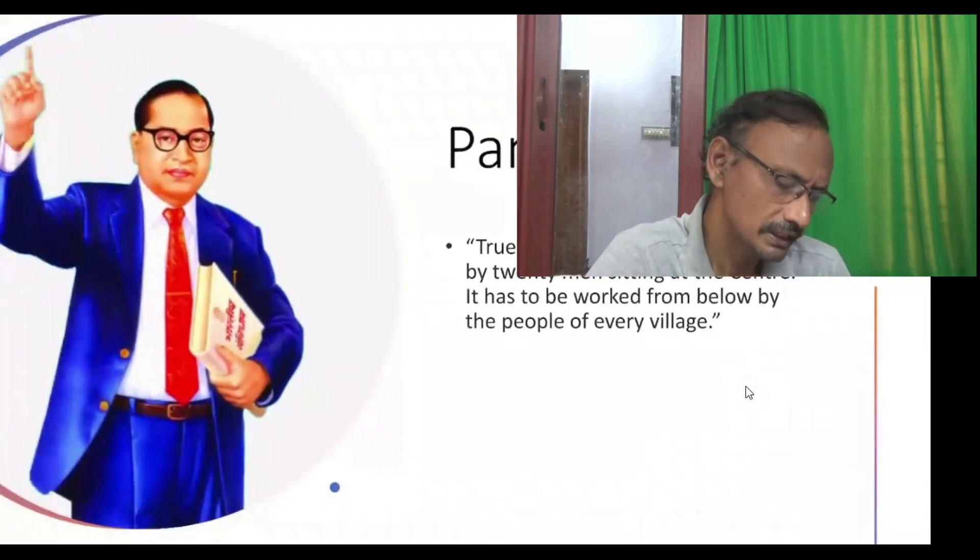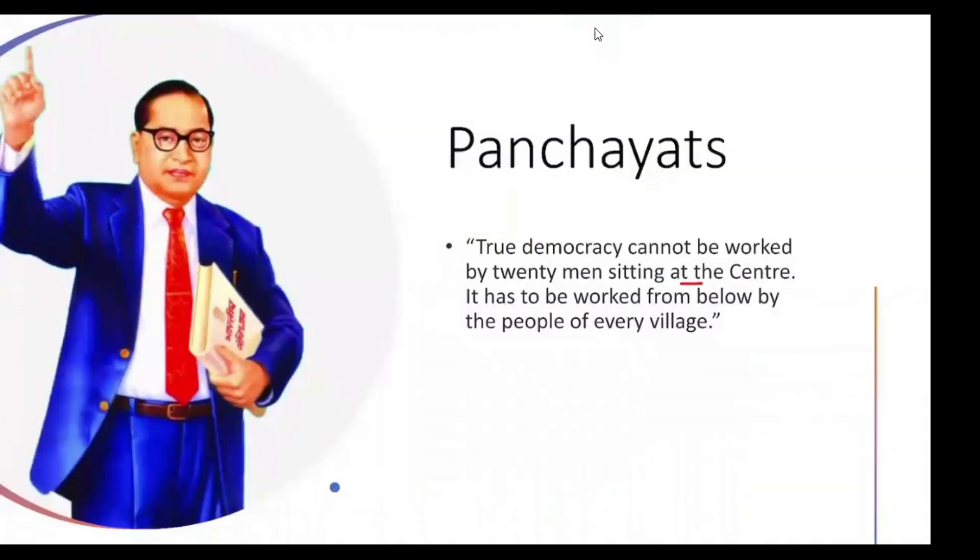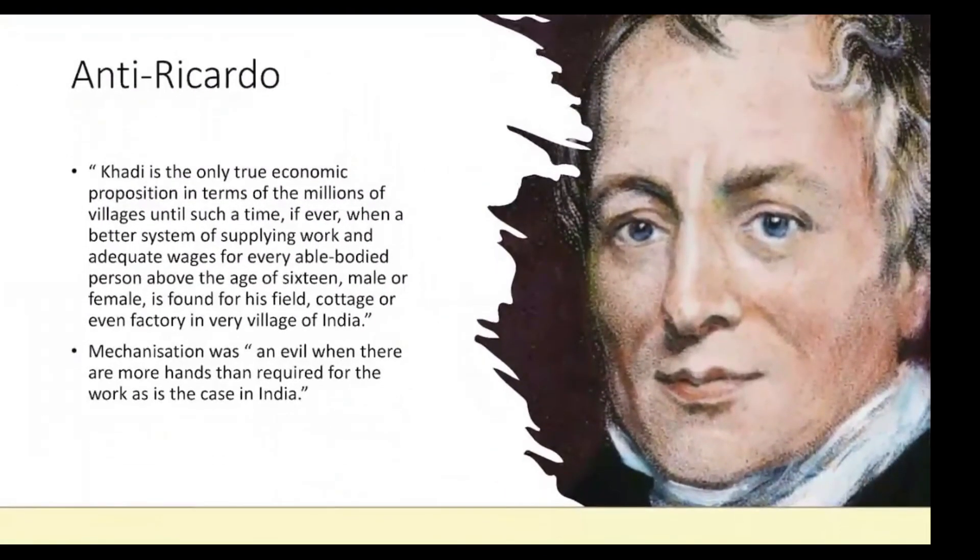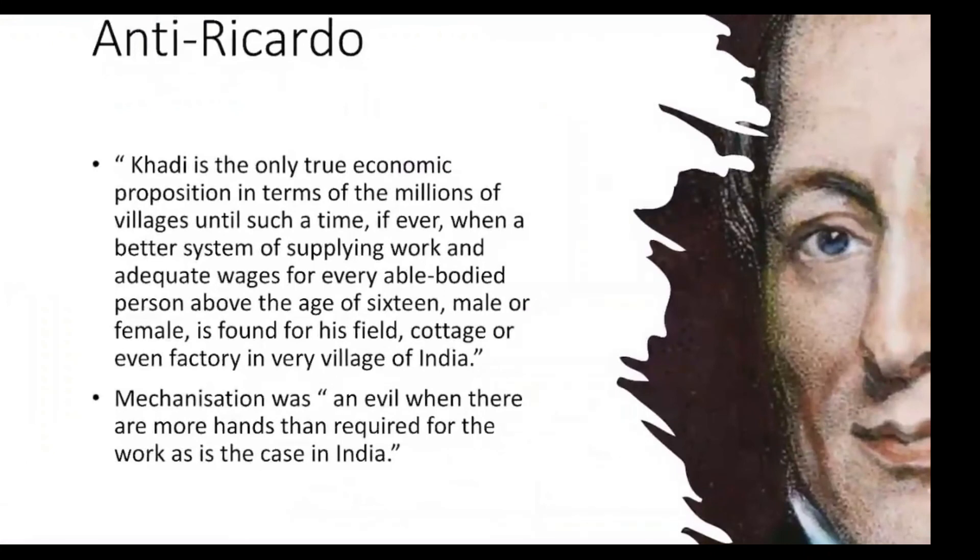To Gandhi, democracy cannot be worked by 20 men sitting at the center. It has to be worked from below by the people of every village. Khadi is the only true economic proposition in terms of the millions of villages until such a time, if ever, when a better system of supplying work and adequate wages for every able-bodied person above the age of 16, male or female, is found for his field, cottage, or even factory in every village of India.